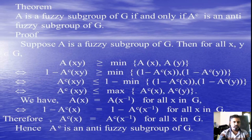Next, this theorem shows the relation between Fuzzy Group and Anti-Fuzzy Group. A is a Fuzzy Subgroup of a group G if and only if A^c is an Anti-Fuzzy Subgroup of G. If this one is complement to the other, the proof is given.